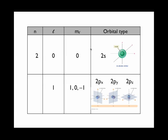Each of these M sub L quantum numbers describes a 2p orbital. And these orbitals are oriented mutually perpendicular to each other like a set of x, y, z axes. They have two lobes of electron density with a node at the nucleus.